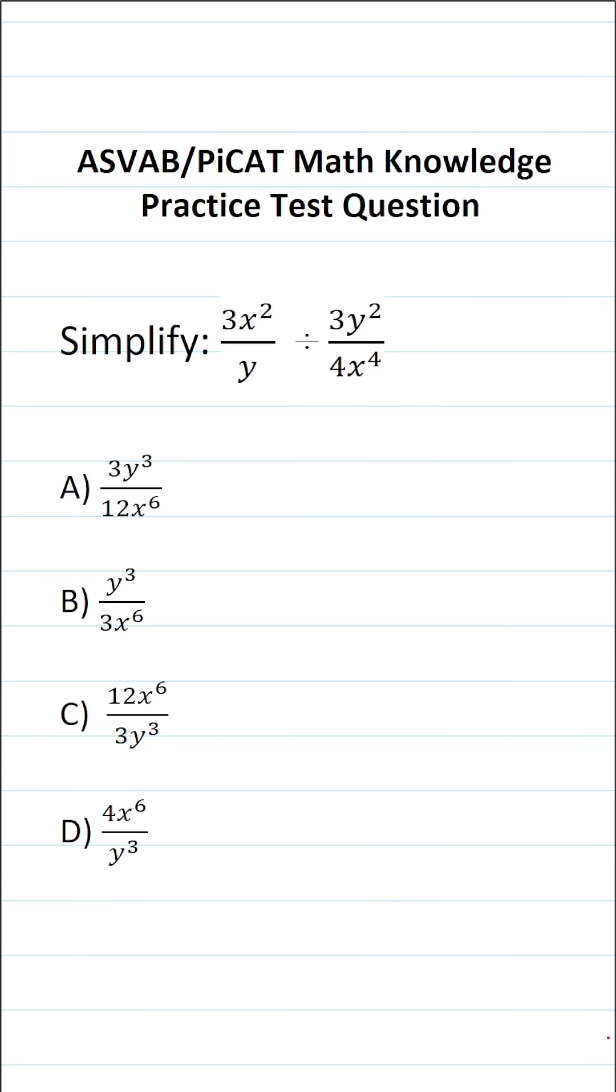This math knowledge practice test question for the ASVAB and PiCAT says simplify 3x squared over y divided by 3y squared over 4x to the fourth.